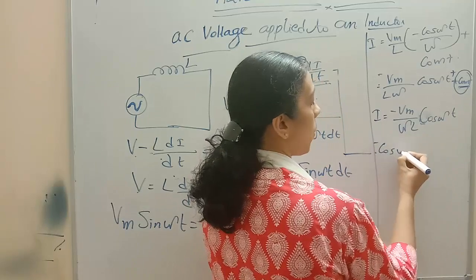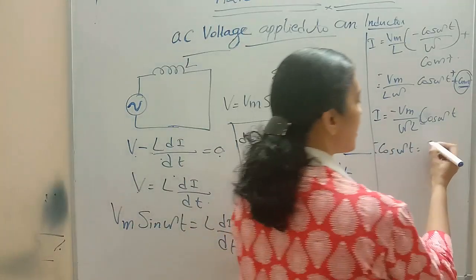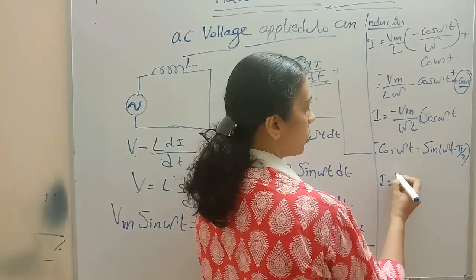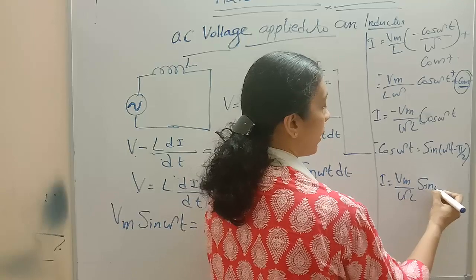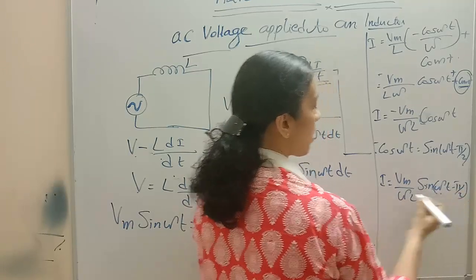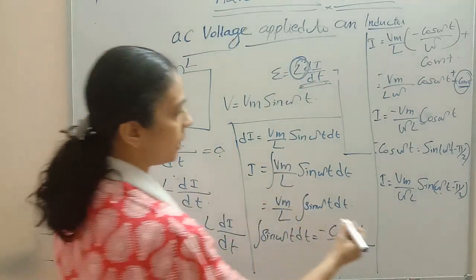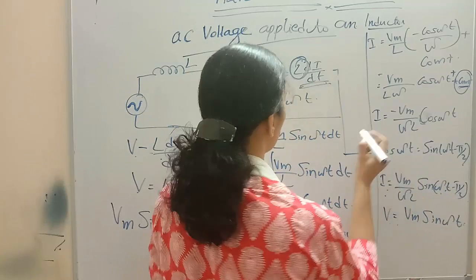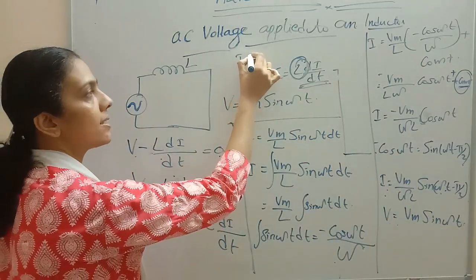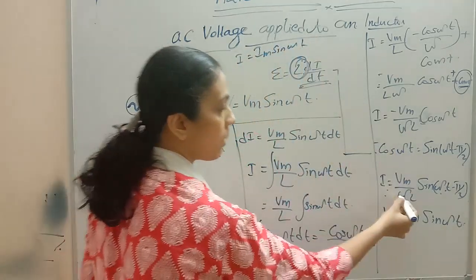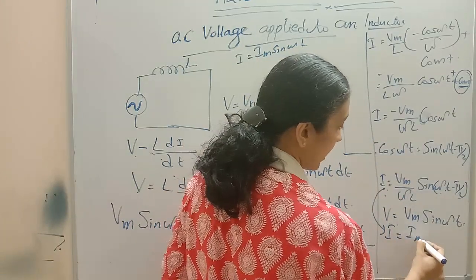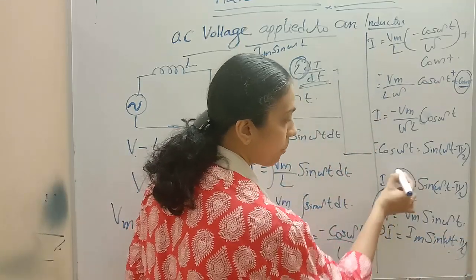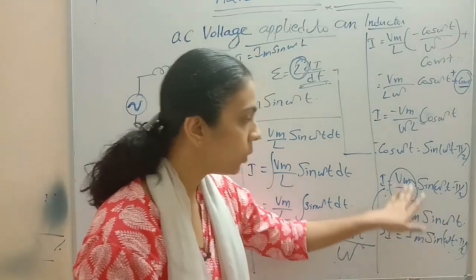We can write minus cos(ωt) as sin(ωt − π/2). So i equals (Vm/ωL)·sin(ωt − π/2), which we write as i equals Im·sin(ωt − π/2). What is the Im value? Im equals Vm divided by ωL.